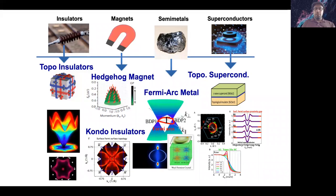The reason why techniques like angle-resolved photoemission spectroscopy (ARPES) or STM tunneling spectroscopy work so well in this field is that ARPES is heavily surface sensitive, and by going to higher photon energies you can also gain bulk sensitivity. So you can probe both the bulk and the surface and see the contrast, allowing you to check for the bulk-boundary correspondence, which is the mathematical definition on which topology is based.